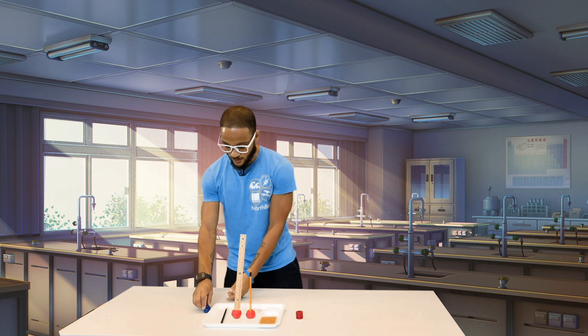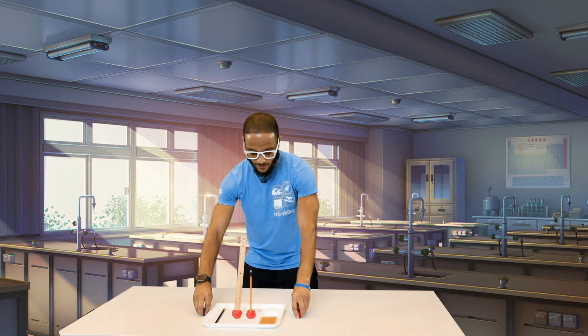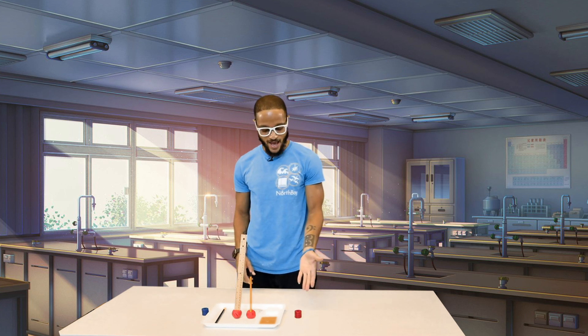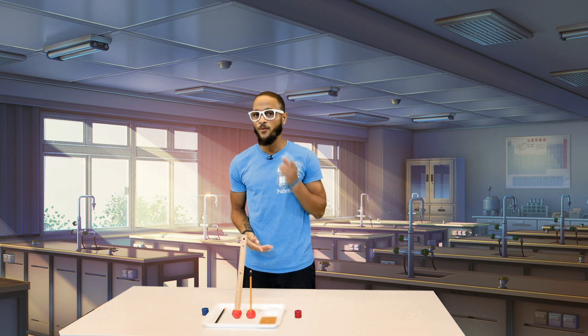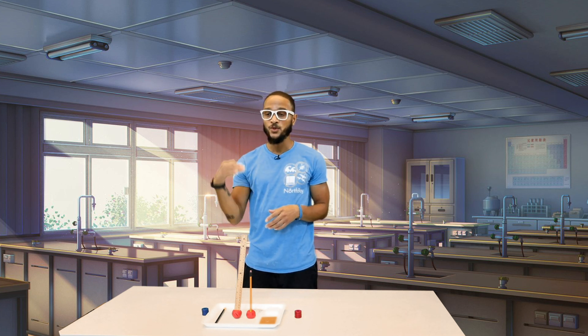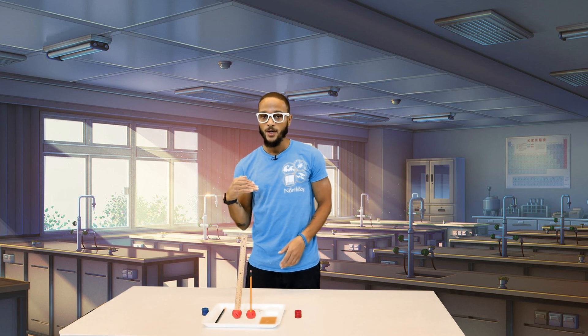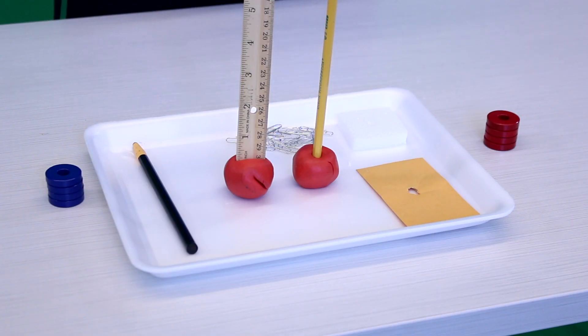It seems as though when the magnets, it doesn't matter how many magnets you have, the repulsion seems to be about the same. I wonder what you guys got. Was it the same when you added the paper clips, was it higher or lower? Was it the same, higher or lower when you added the paper? Was it the same, higher or lower when you added the styrofoam? And was it the same, higher or lower when you flipped the different types of magnets?